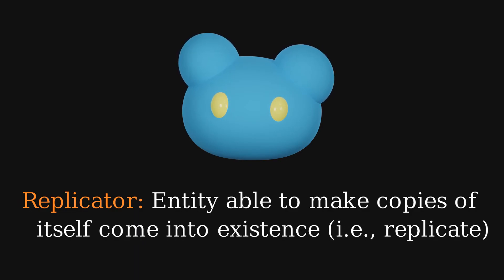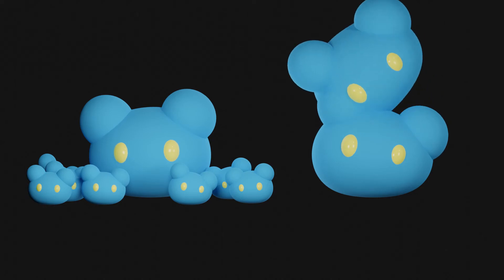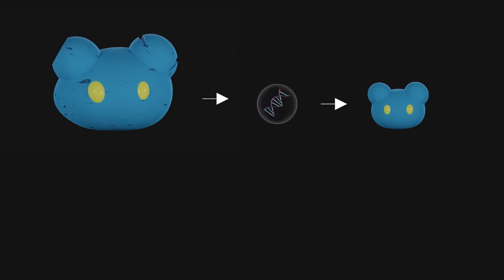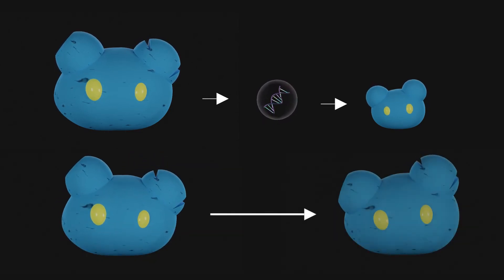Notice how I've chosen the word replicator deliberately. These entities don't reproduce, they replicate. To reproduce means to generate a new individual from your genetic information. To replicate is to create a copy of whatever state you're currently in.